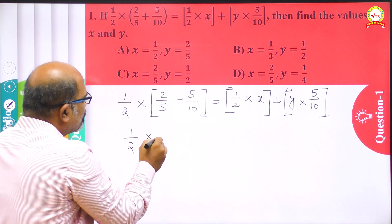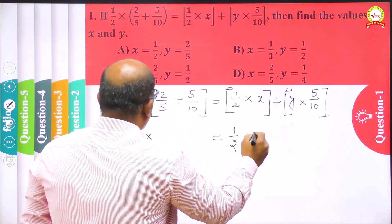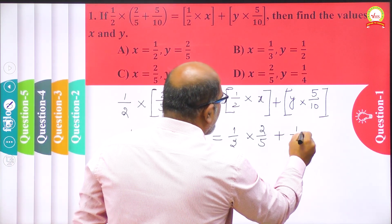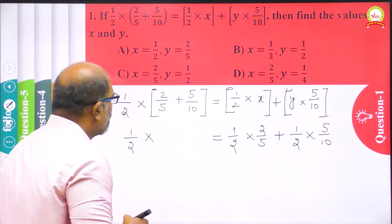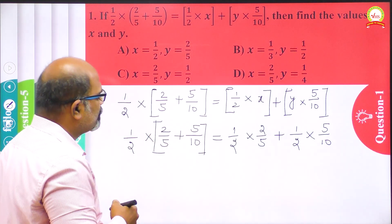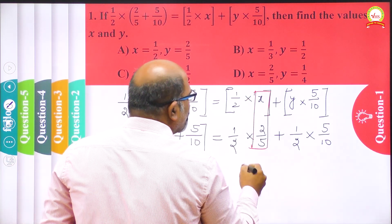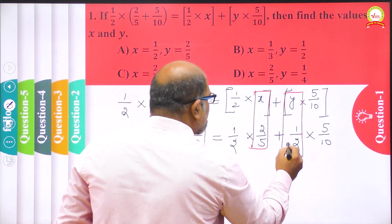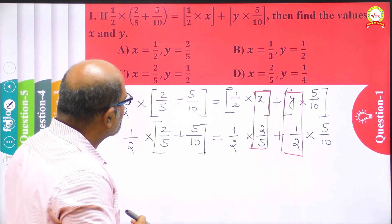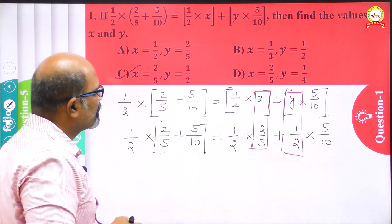When we distribute 1/2 over these addends, we get: 1/2 multiplied by 2/5, and then 1/2 has to be multiplied with 5/10 — so 1/2 multiplied by 5/10. On the left side we are having 2/5 plus 5/10. By comparison you can tell that the value of x is replaced by 2/5 and the value of y is replaced by 1/2. So the solution is x = 2/5 and y = 1/2, and option C is the correct answer.